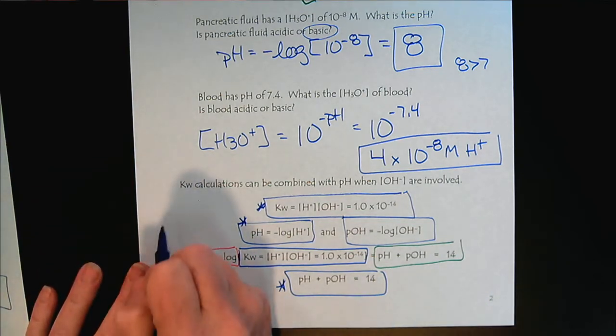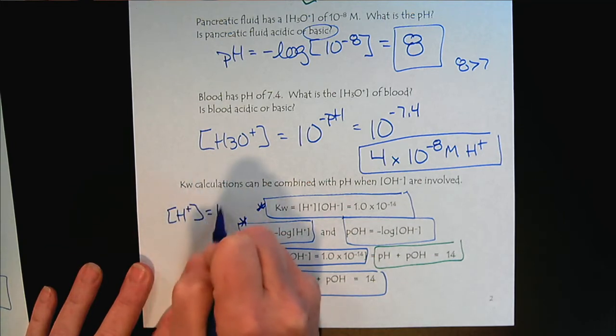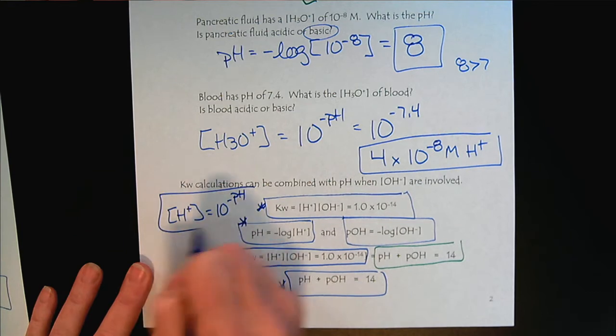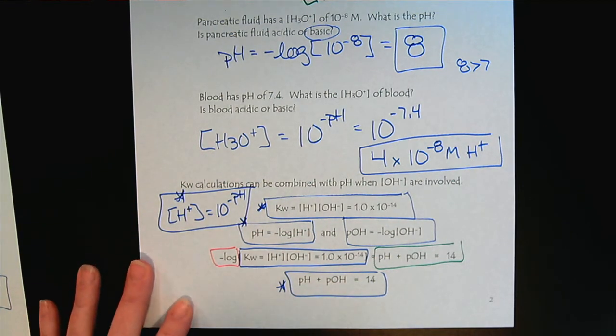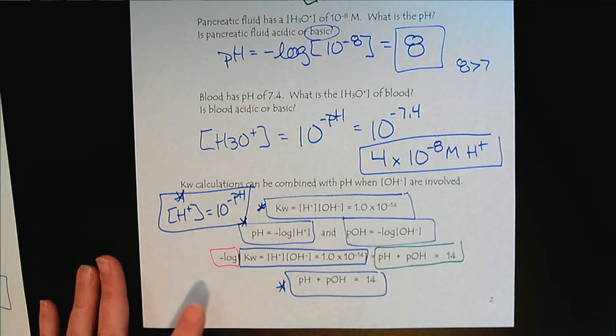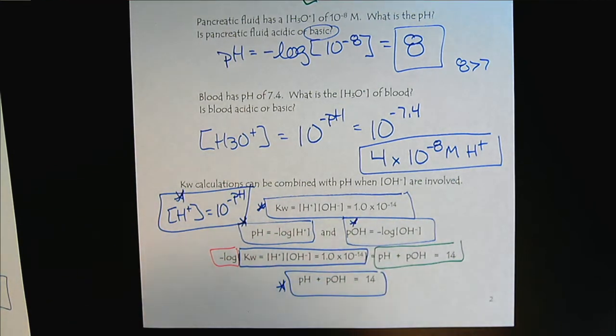And then the fourth one would be that the hydrogen ion concentration equals 10 to the minus pH. So for acid-base chemistry, these would be the four equations that you would find helpful. And this one you should just by analogy. Let's put these equations to work now on the next page.